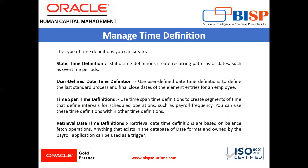Next is a user defined date time definition. A user defined date time definition is used to define the last standard process and final close date of the element entries for an employee.